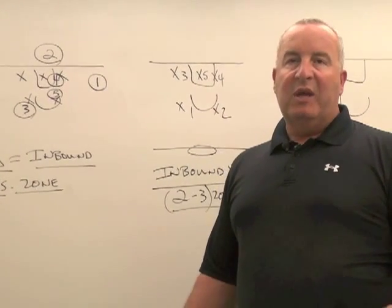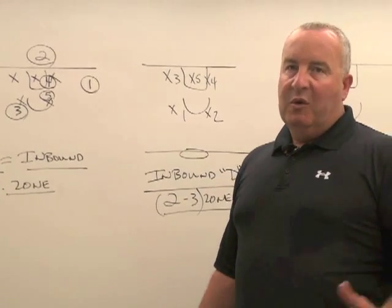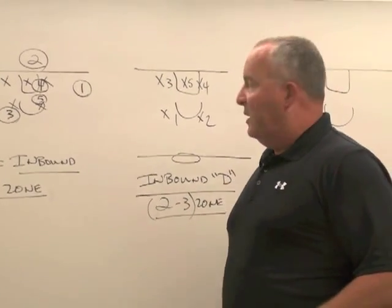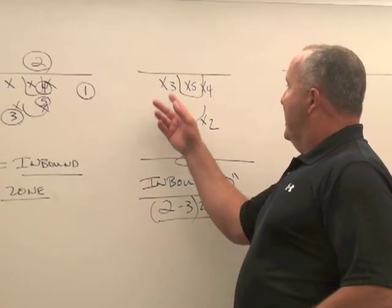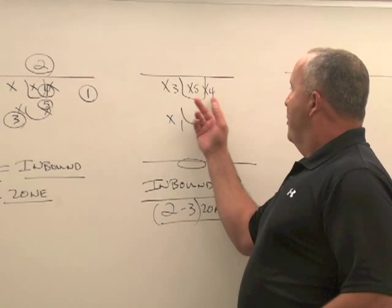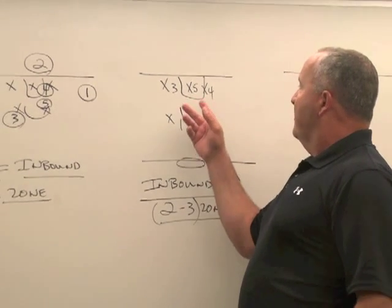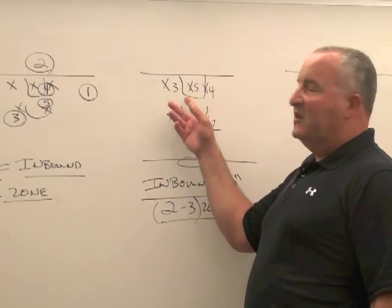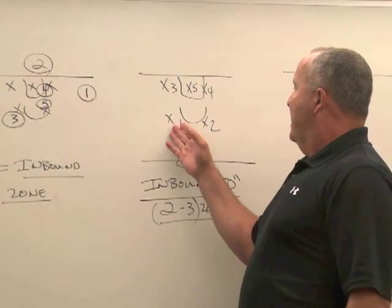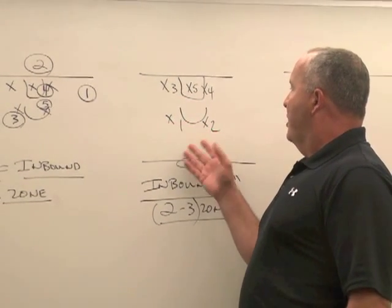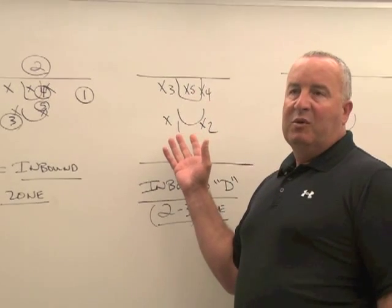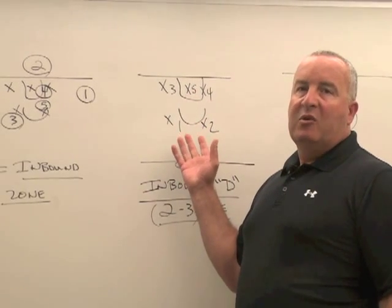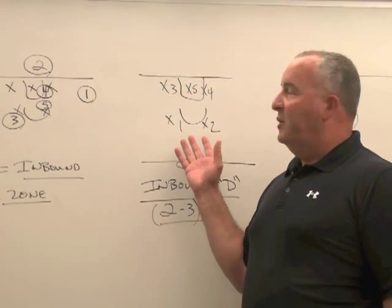I'm just going to show you how we diagram the 2-3 zone defense very quickly. So here is X3, two forwards X4, X5 is the center, X1 and X2 are two guards — and this is how most teams will defend us underneath our own hoop.